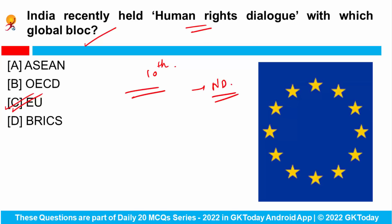Which country launched an aviation passenger charter to sensitize passengers on their rights? This country is the UK, talking about the importance of safeguarding freedom, independence, and diversity, and how human rights defenders and journalists need protection. Which two parties are related to Human Rights Dialogues? India and the European Union.